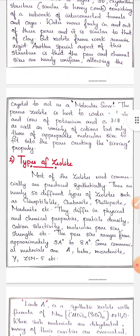The types of zeolites include A, beta, mordenite, Y, ZSM-5, and others. There are nearly 50 different types of zeolites.